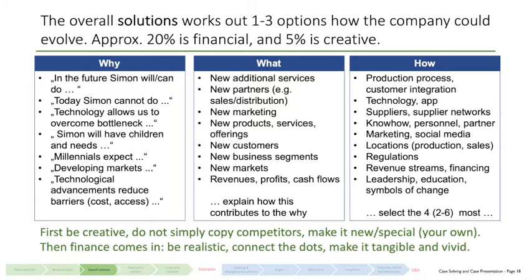The 'what' part is a narrower set. Things listed here include: we can add services, add partners for sales distribution, new marketing, new products or services, new offerings, new customers, new business segments, new markets, new revenue streams, new profit elements, new cash flows. Importantly, whatever you choose in answering the 'what' question, make sure you can explain how this actually contributes to the 'why.'